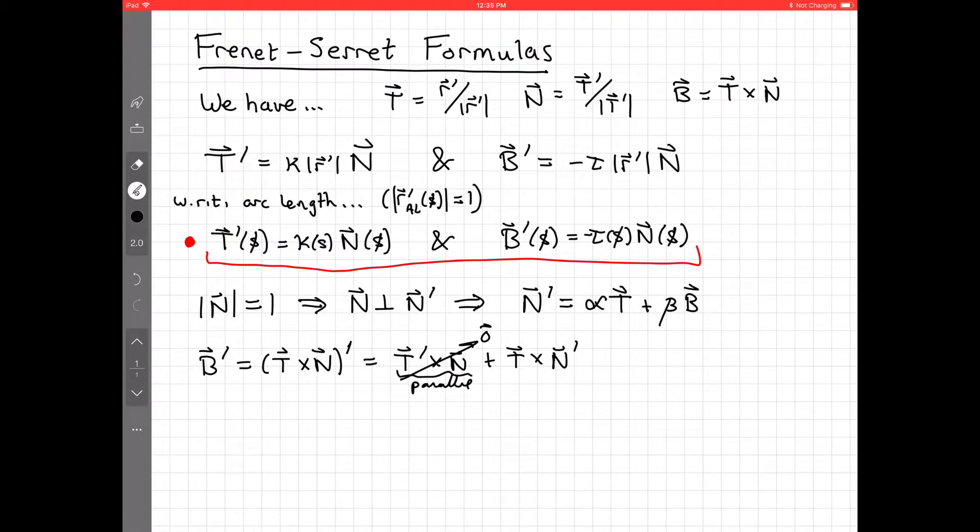And so now let's consider what happens if we take t and we cross product it with n'. Well, let's see. What is that? Well, n', we have already discovered, is some copy of t plus some copy of b.